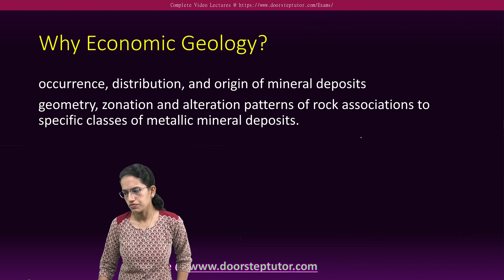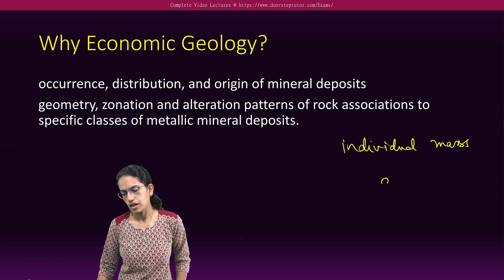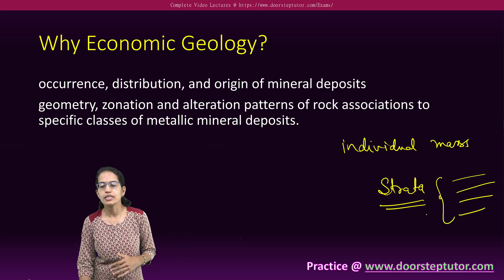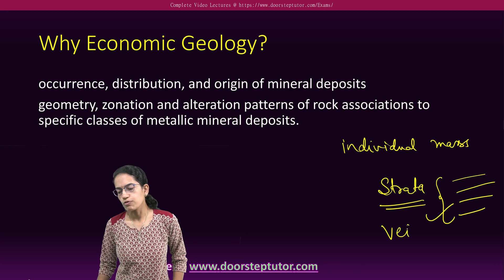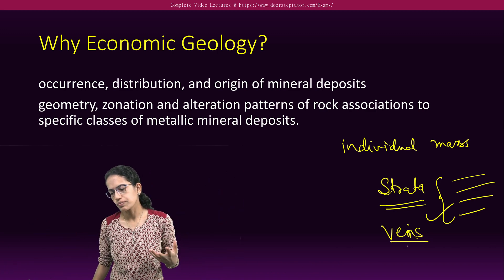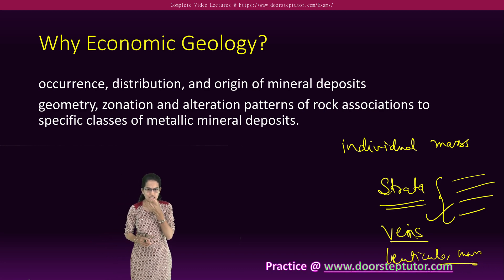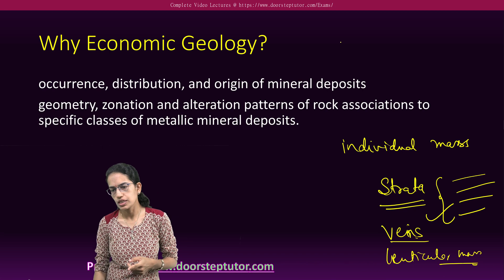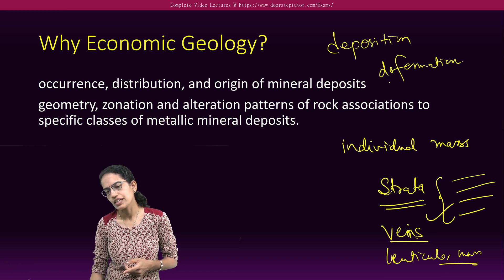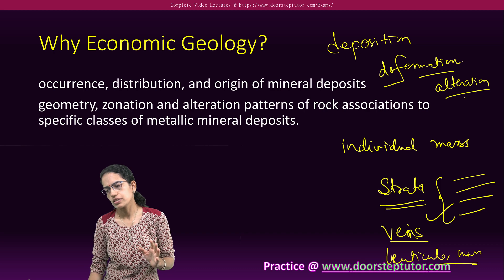What are the ways in which formations are important? The individual mass that exists could be either in the form of strata. In structural geography we have already seen what strata are — when beds are arranged one after another in a sedimentary structure, they are called strata. They could also be in the form of veins, where deposition fills gaps with magma, and these veins can also be in the form of lenticular masses. The most important things under economic geology are the deposition, the formation, and the deformation, as well as any alterations in the structure of the deposition.